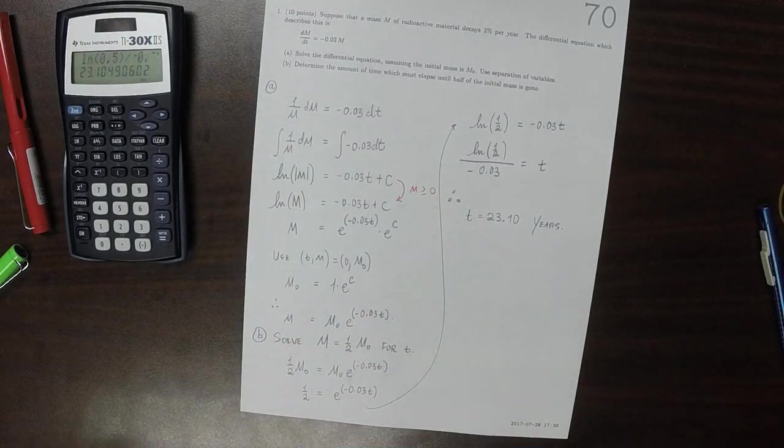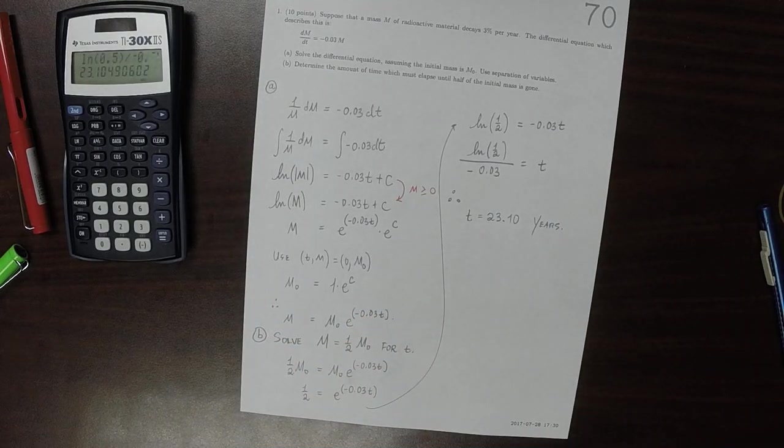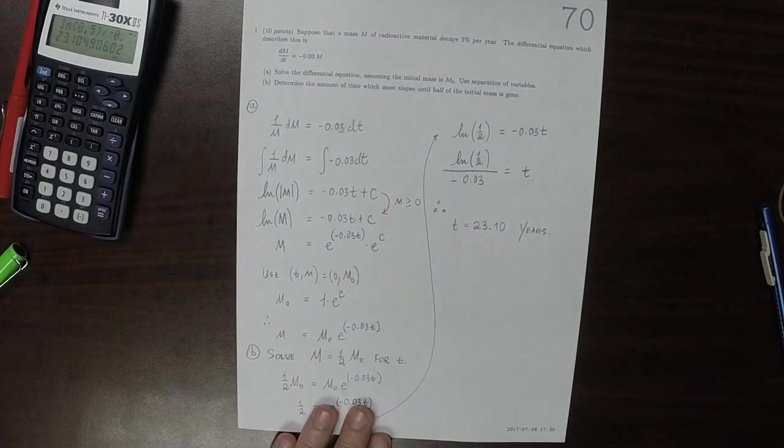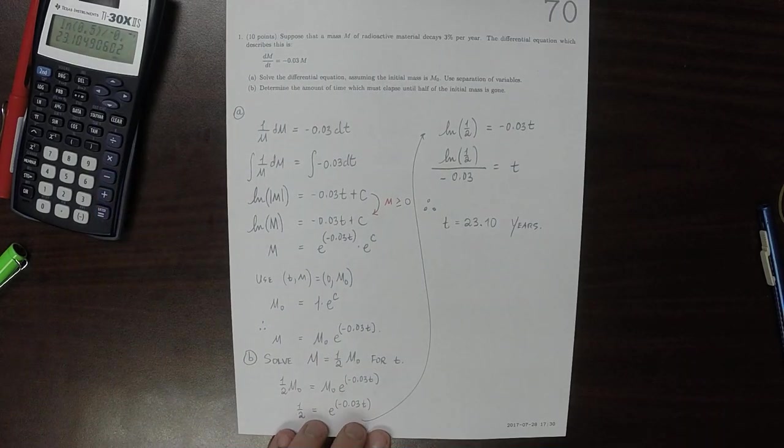So when something decays at 3% per year, it takes 23 years, a little more than 23 years, until it's halfway gone.